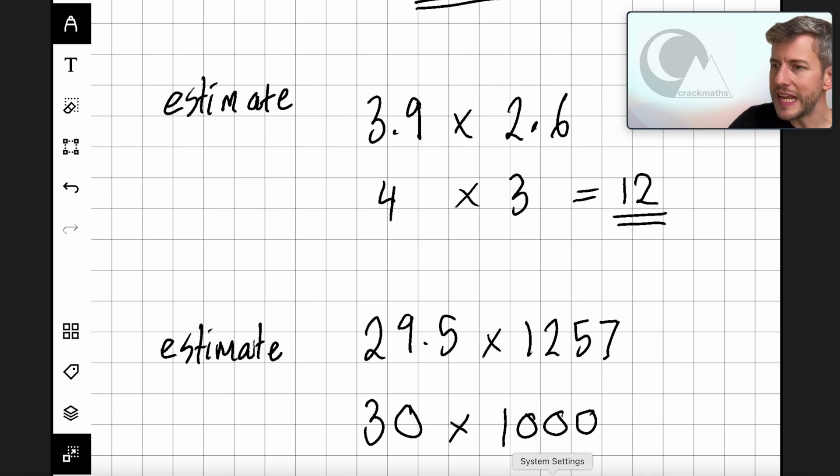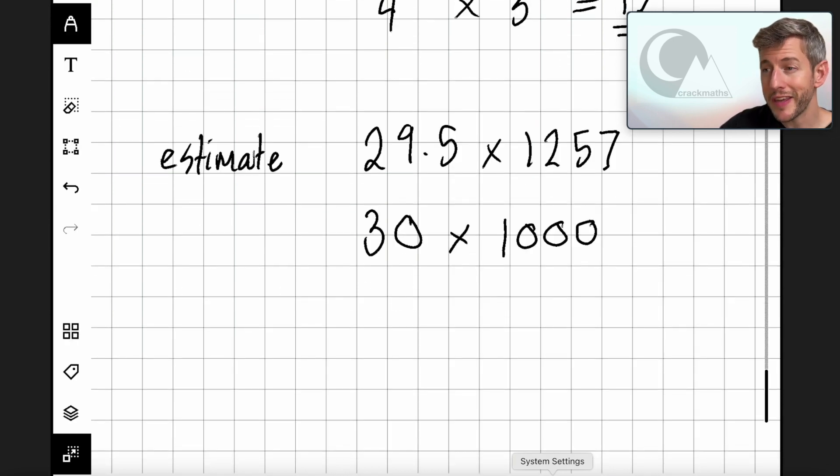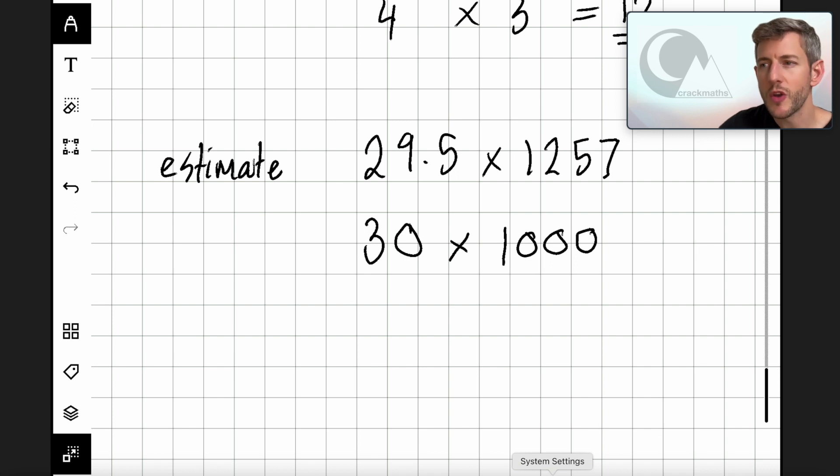And so that leaves us with a nice easy calculation. So if we have 30 multiplied by 1000, we can multiply the 3 and the 1. 3 times 1 is 3, and then we can simply add the zeros: 1, 2, 3, 4. Then I can break this up with a comma, and I can see that my answer is 30,000. So if the question asks to estimate 29.5 times 1257, the answer is 30,000.